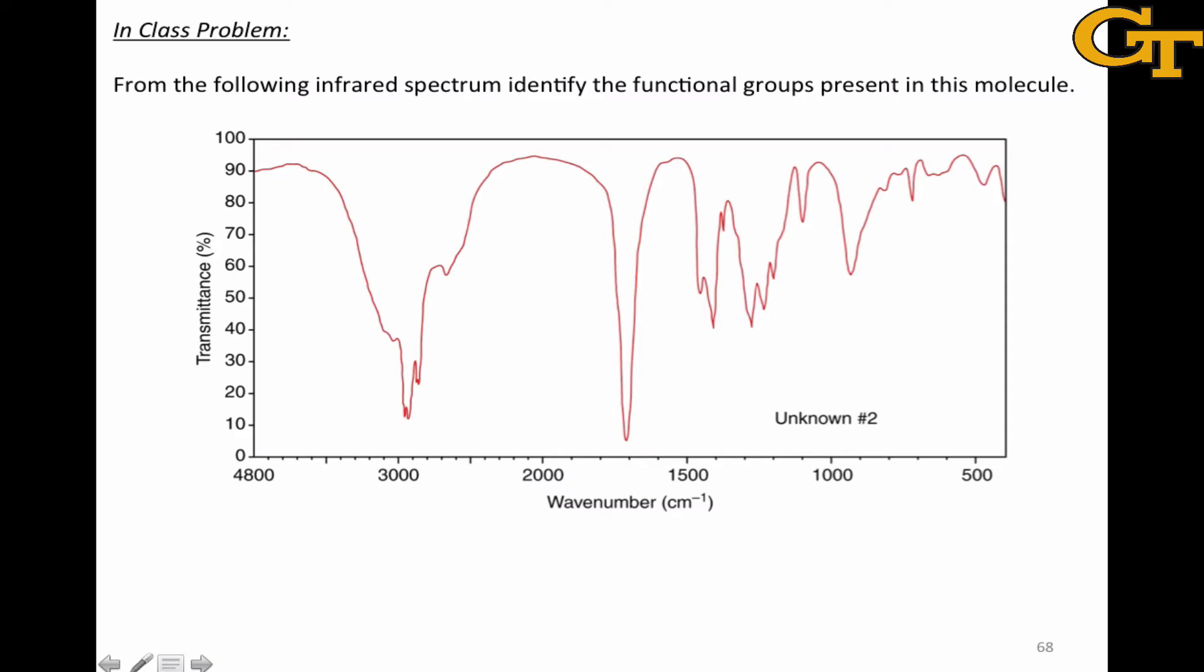Here's a second example of an infrared spectrum from which we can identify some functional groups. Once again, before I even really dive in and start looking at peaks, I'm going to chunk out the spectrum into specific regions by drawing lines across it. So again, we have the 3000 dividing line, the 2000 to 2500 range for triple bonds, 2000 to 1500 for double bonds, and then the fingerprint region and heavy atom single bond stretches south of 1500.